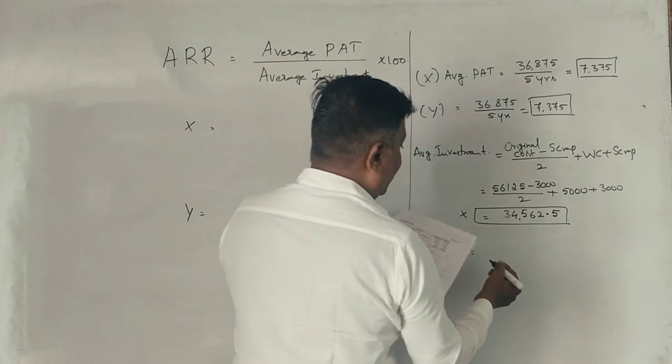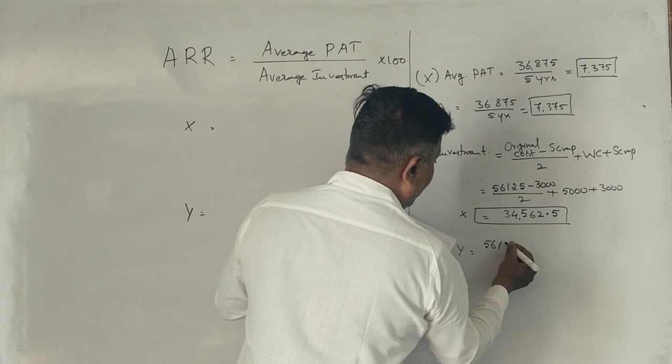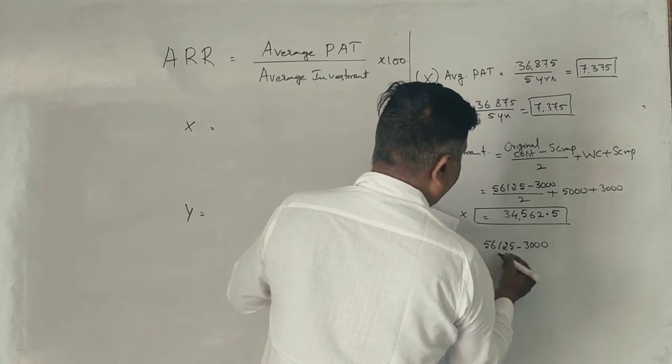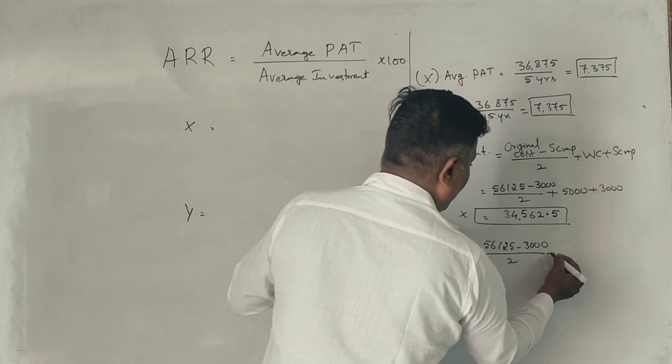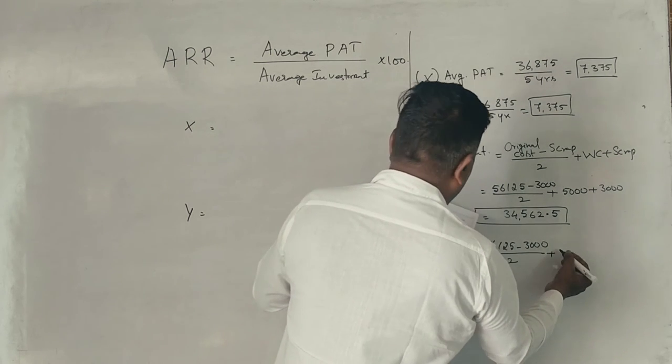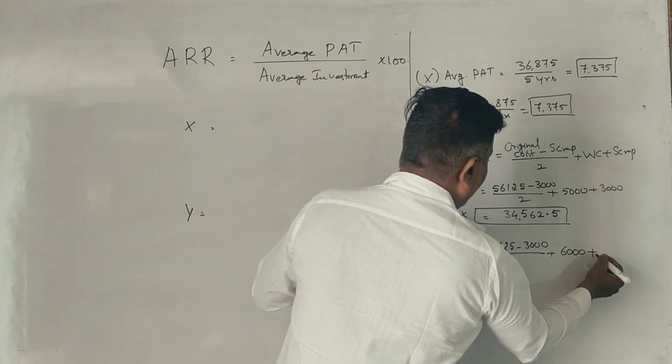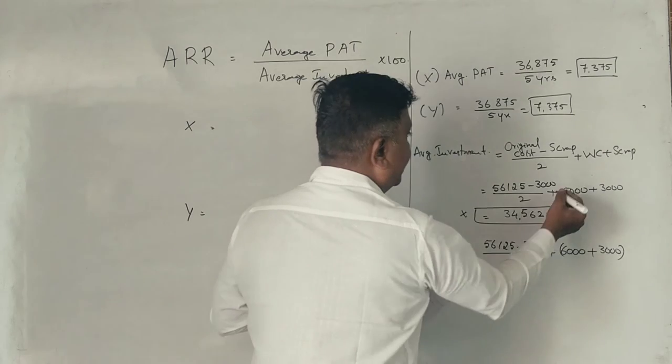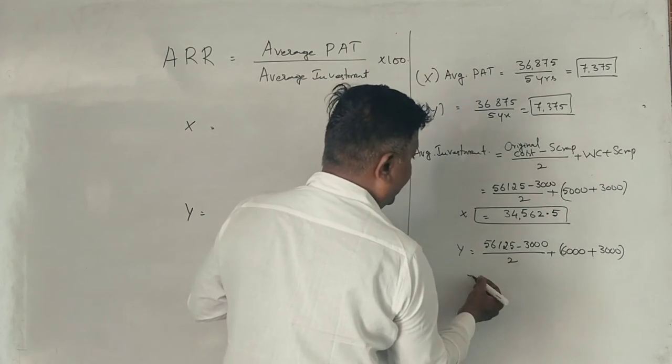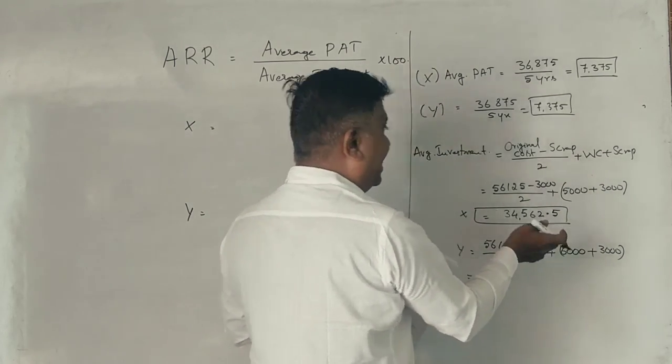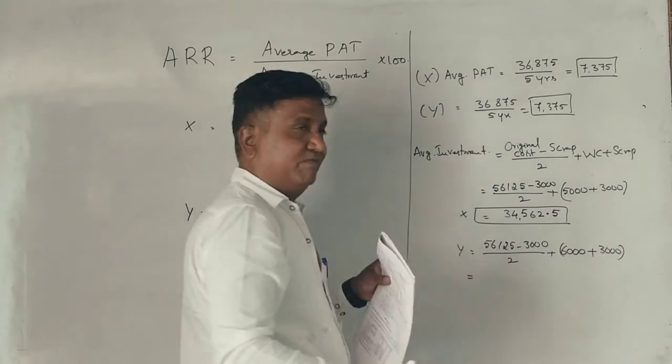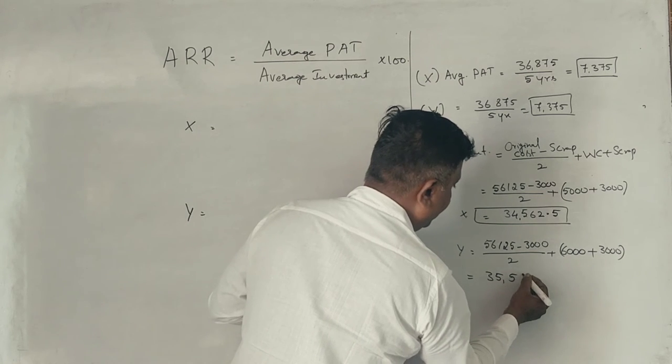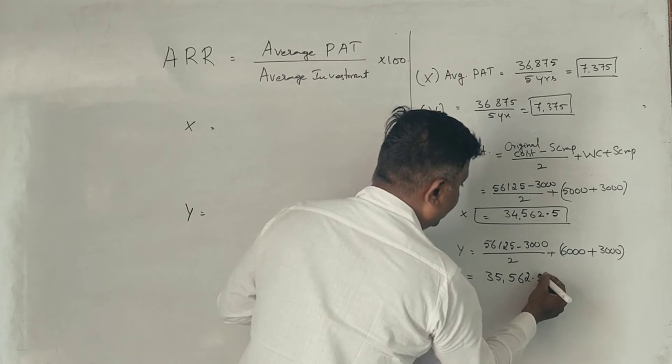Why? The original cost is the same, $56,125. Scrap value is also same, divided by 2. But working capital is $6,000, correct? Plus $3,000 scrap. So $53,125 divided by 2 plus $9,000. $35,562.50. Correct?